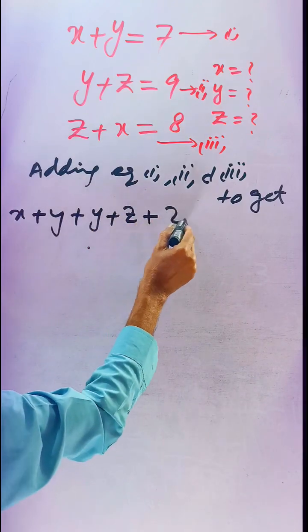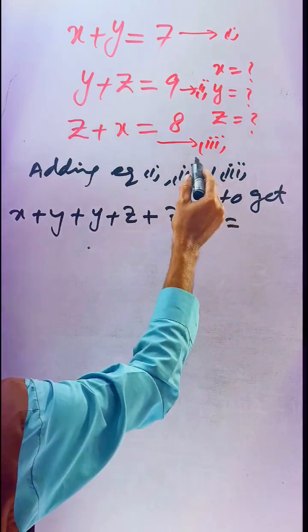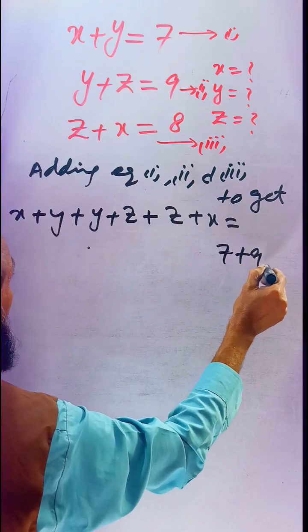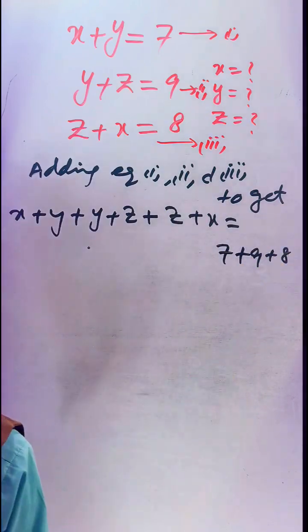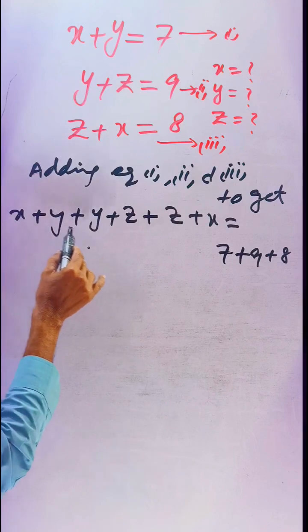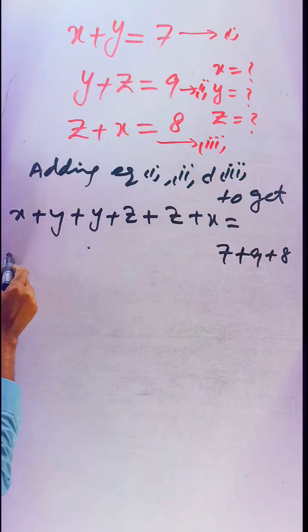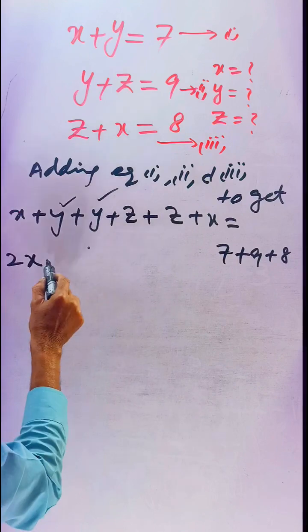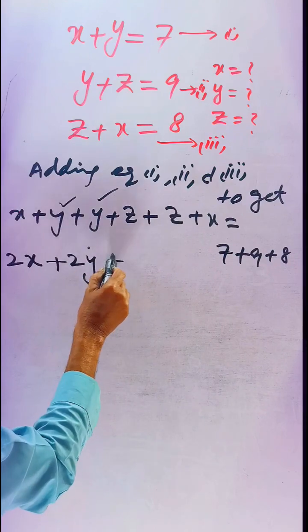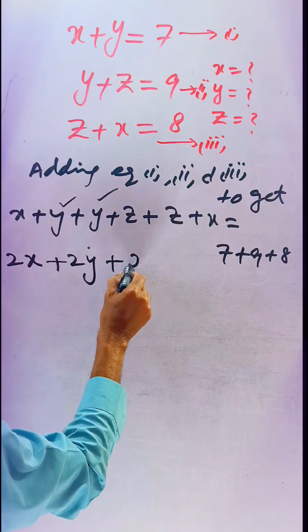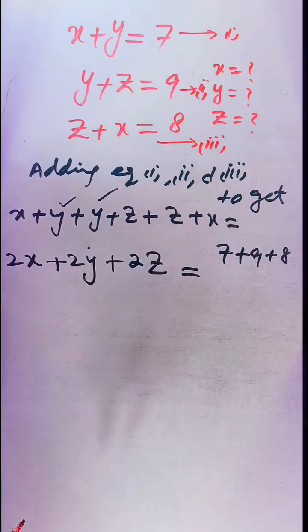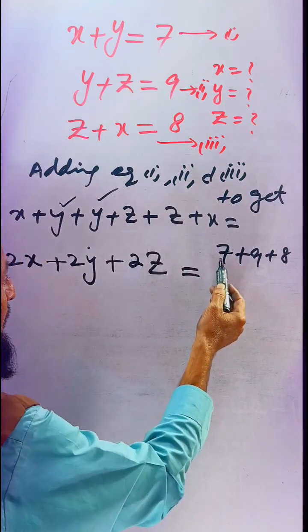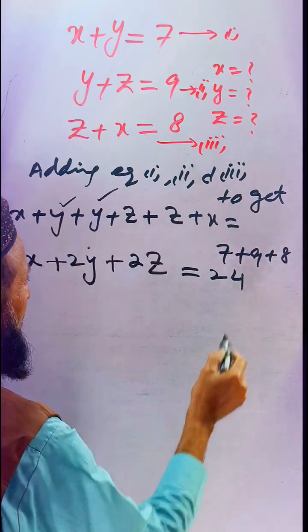Look here, x and x is repeated twice, so we can write 2x. Similarly, y and y repeated gives us 2y. Similarly, z and z gives 2z. If we add the right side, we get 7 plus 9 is 16, plus 8 is 24. Taking 2 common: 2 times (x plus y plus z) equals 24.